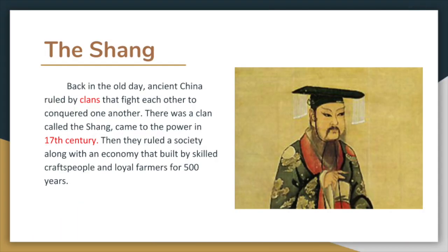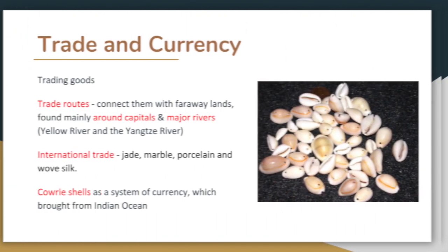The Shang. Back in the old days, ancient China was ruled by clans that fought each other to conquer one another. There was a clan called the Shang that came to power in the 17th century. They ruled a society along with an economy built by skilled craftspeople and loyal farmers for 500 years.